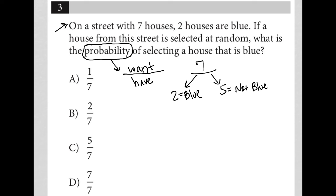So the question asks, what is the probability of selecting a house that is blue? So I want a blue house. How many houses are blue? Two. So my numerator is two. What do I have? Well, I have a total of seven houses. So that number is seven. And therefore, the answer to this question is two sevenths. And therefore, choice B is the correct answer.